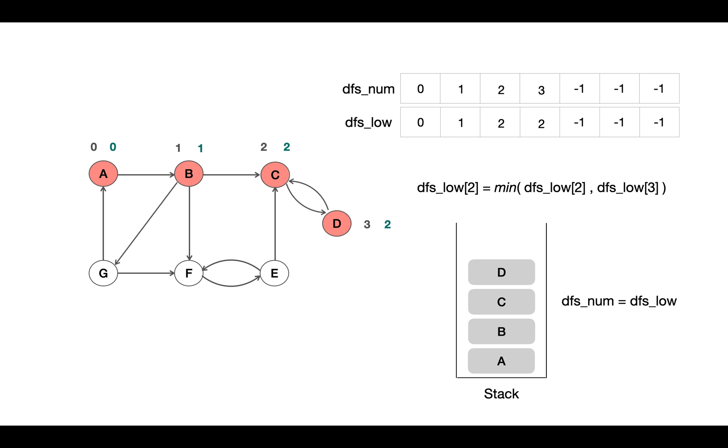So whenever we find those two values equal for any node, we pop all the nodes above in the stack and these nodes will form a strongly connected component. So C, D is a SCC here.